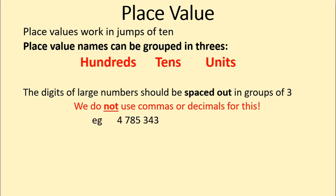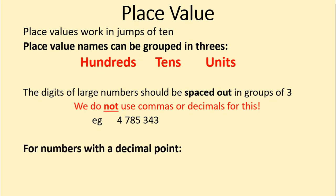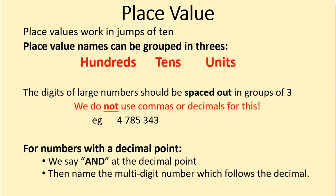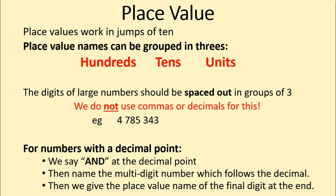Here's an example. There are no commas or decimals in this number, so this is a whole number. As you can see by my spacing, this is 4,785,343. For numbers with a decimal point, we will know that the value is not a whole number. It may have a whole number part, and it may have a decimal part that comes after that. We say 'and' at the decimal point, then name the multi-digit number that follows, and give the place value name of the final digit.